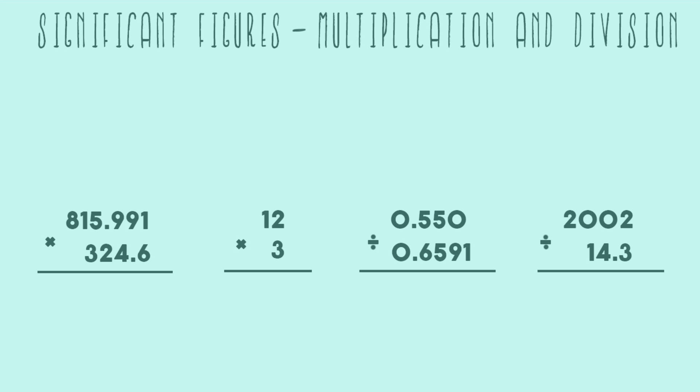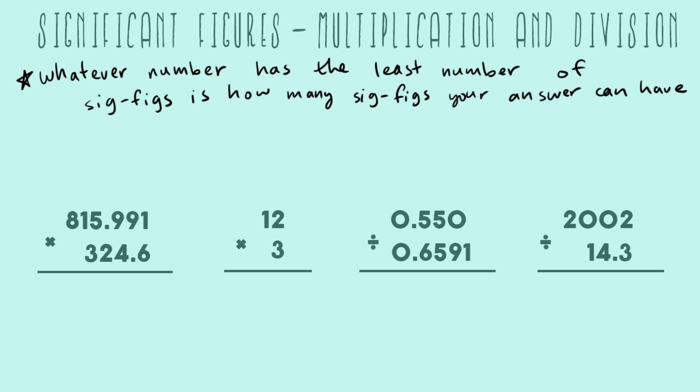The first thing we have to learn with all significant figures math is just the generic rule. For multiplication and division, it's actually the easier rule, and that is whatever number has the least number of sig figs is how many sig figs your answer can have. In all these problems we're going to assign how many sig figs each individual number has, and then at the very end make sure our answer has that same number of sig figs.